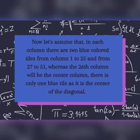Now let's assume that in each column there are two blue colored tiles from column 1 to 25 and from 27 to 51, whereas the 26th column will be the center column. There is only one blue tile as it is the center of the diagonal.